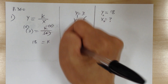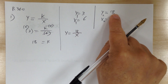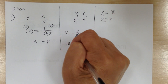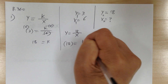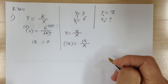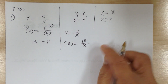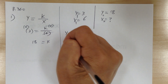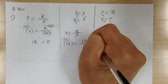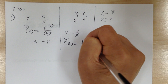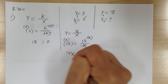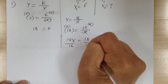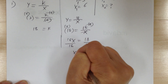Then I'm going to use this equation to solve. So 18 equals 18 over x. You can see x equals 1. But if you don't see that, multiply by the common denominator — this will cancel out. So you get 18x equals 18; divide both sides by 18. So x equals 1.